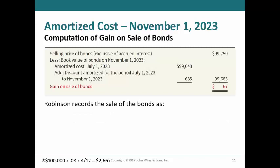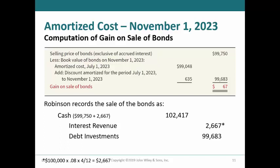The selling price of the bonds was $99,750, or three-quarters of the face amount of $100,000. The carrying value of the bonds at the date of the sale was $99,683, and the gain was $67. To record the entry, Robinson would debit cash for $102,417, credit interest revenue for $2,667, credit debt investments for $99,683, and credit gain on sale of investments for $67. The accrued interest of $2,667 equals the face amount of $100,000 times the stated rate of 8% times 4/12 for the four months since the last interest payment on July 1st.